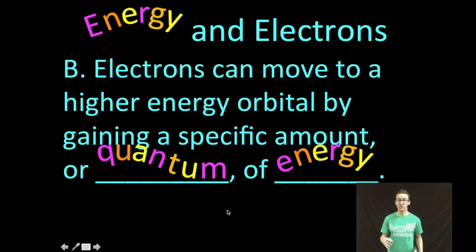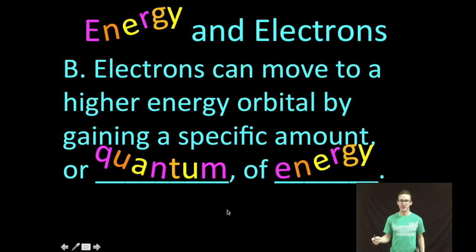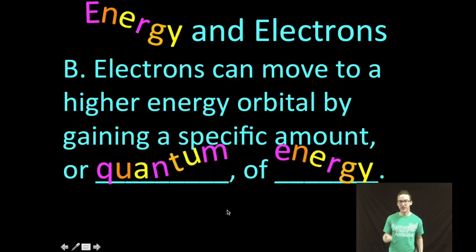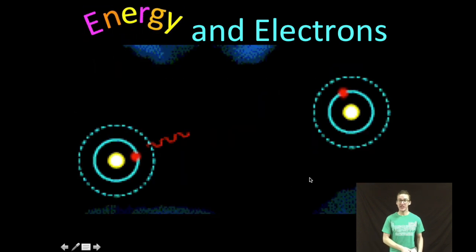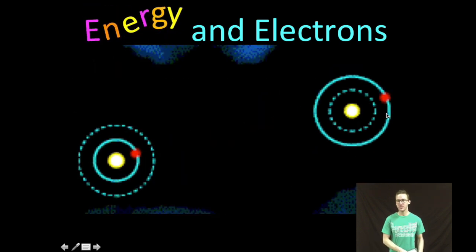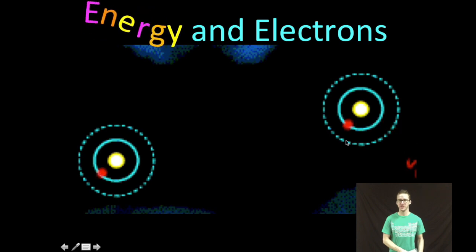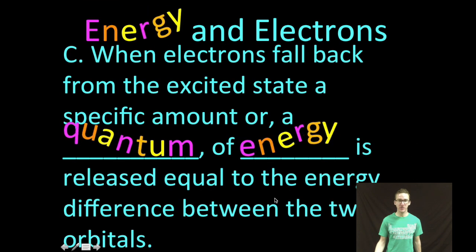Now, in order for electrons to move to a higher energy level, they must gain a specific amount or a specific quantum of energy. So again, notice that in order for this electron to jump up, it has to absorb a specific amount of energy. Keep in mind though,